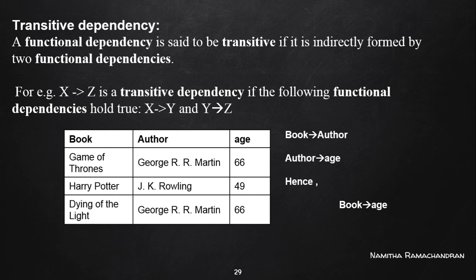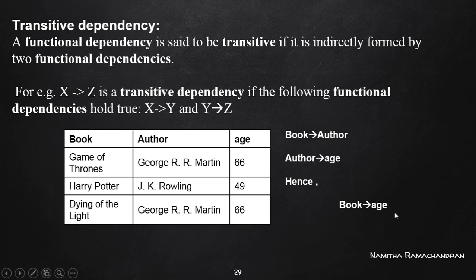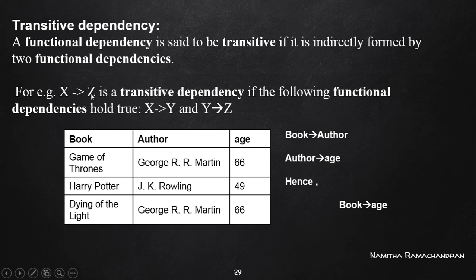So this dependency exists: book derives author name, and author derives age. From these two functional dependencies, we can say there exists a transitive dependency: book → age. Book indirectly derives the age of author with the help of the author's name. If these two functional dependencies — X → Y and Y → Z — exist in a relation, then the transitive dependency X → Z also exists.